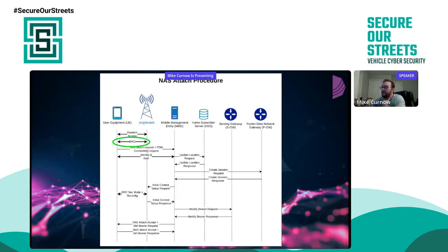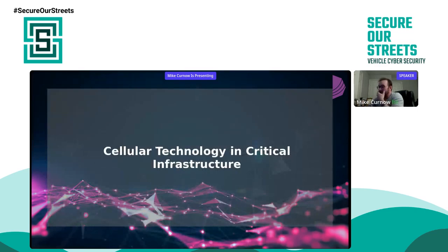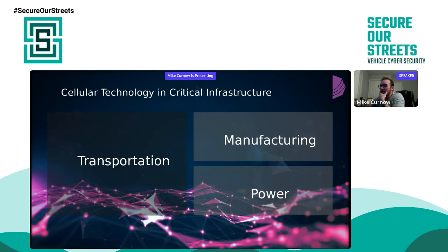The RRC procedure, in the entire NAS attach procedure process, is what precedes the NAS attach and PDN connectivity requests — after which your UE wants to divulge a subscriber identity. Moving on to cellular technology in critical infrastructure: I looked at three areas to build a picture of how ubiquitous this technology is in day-to-day life and upcoming systems — transportation, manufacturing, and power.